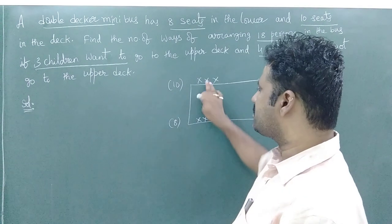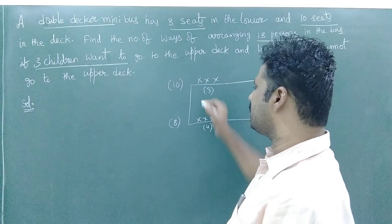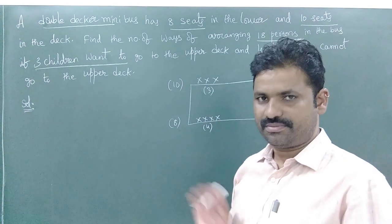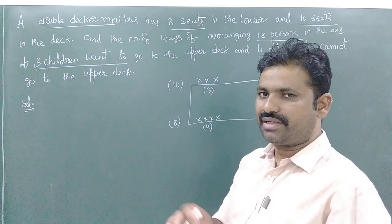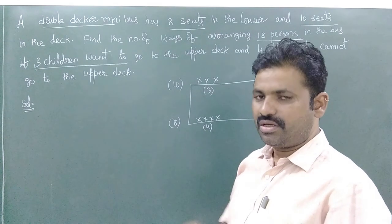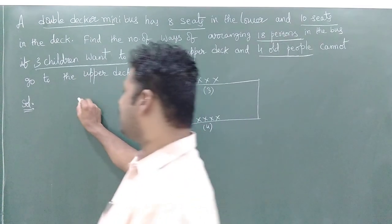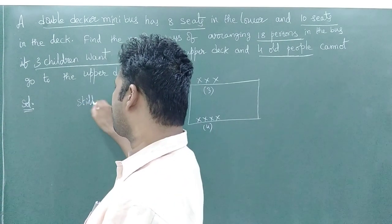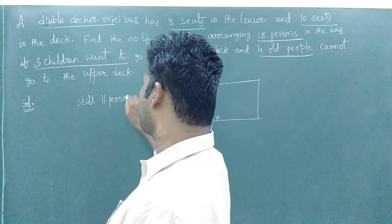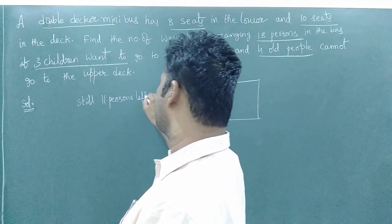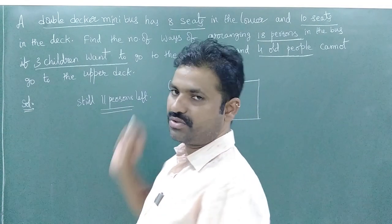Now 4 plus 3 — these 4 old people and these 3 children — 7 persons are accounted for. Totally there are 18 persons; out of the 18, 7 persons are fixed. So still 11 persons are left. 11 persons and 11 places are also left.